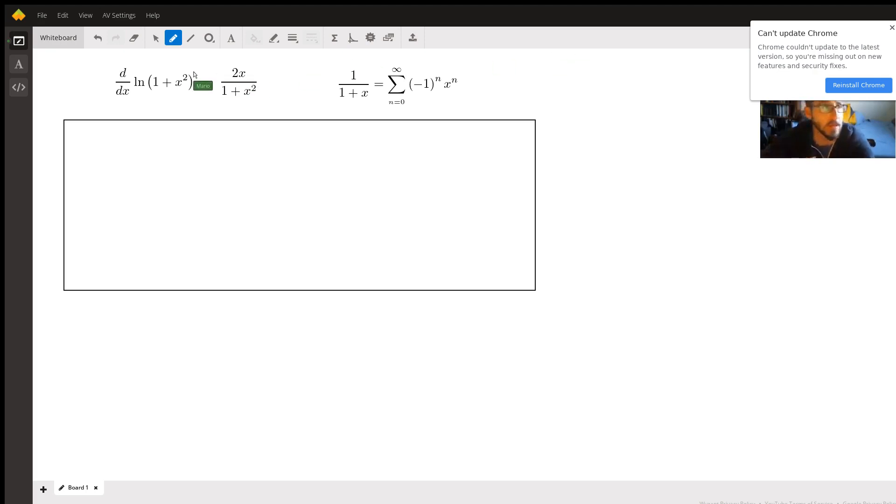So look at f prime. If we look at the derivative of the natural log of 1 plus x squared, using the chain rule in this problem here, we'll get 2x over 1 plus x squared.